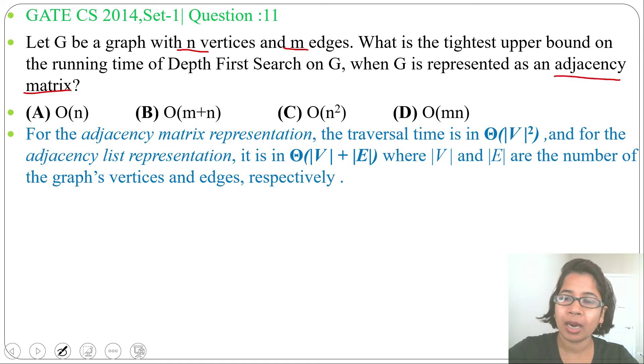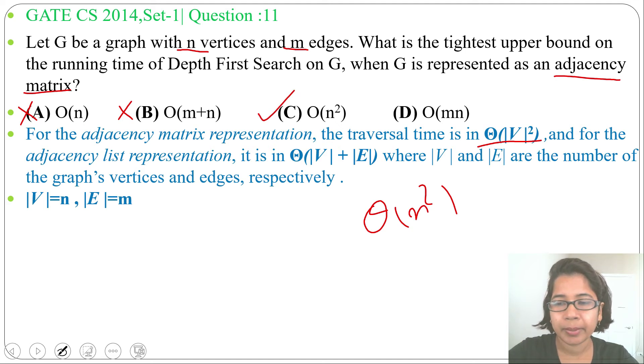Adjacency matrix representation means Theta of number of vertices square, so Theta of n square, as number of vertices is n. Now check in which option it is given. Option A, Big O of n, wrong. Option B, Big O of m plus n, wrong. Option C, Big O of n square, this is correct.